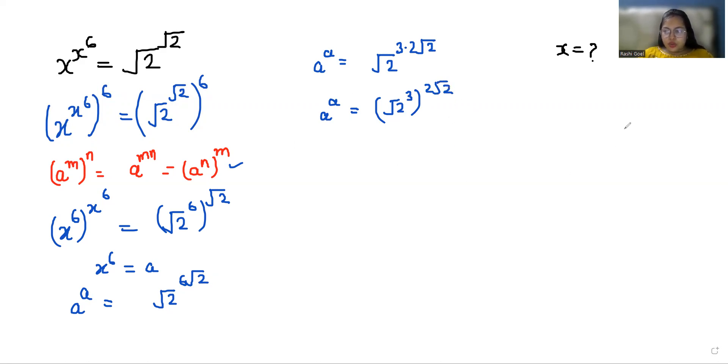Now 2√2 we can write this as √8, or √8 we can write as square root of 2^3.